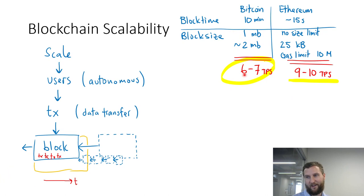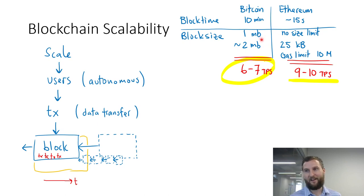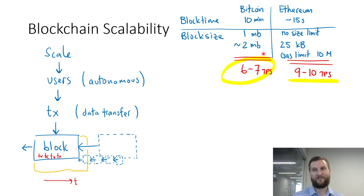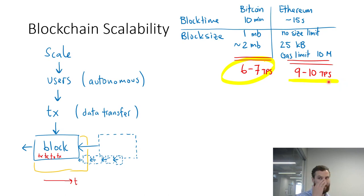In terms of bitcoin and ethereum, scalability is the direct metric. Bitcoin is slow at 10 minutes per block compared to ethereum at 15 seconds. Bitcoin can't process many transactions due to block size — with SegWit you can get approximately two megs of transactions into a block. Breaking that down, bitcoin manages maybe six to seven transactions per second, and ethereum is only slightly better at nine to ten on average, peaking at maybe 20 during busy times.